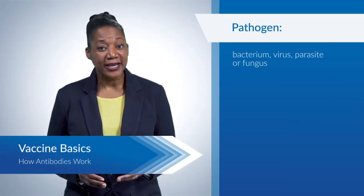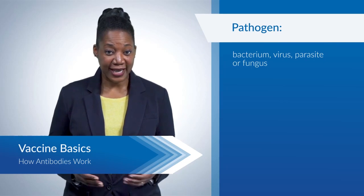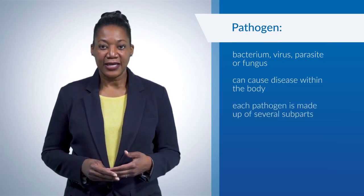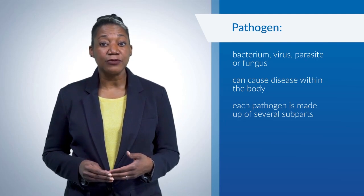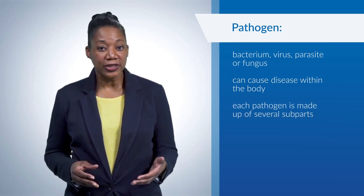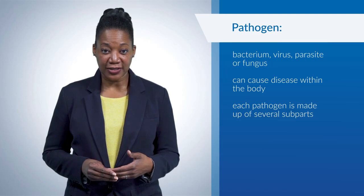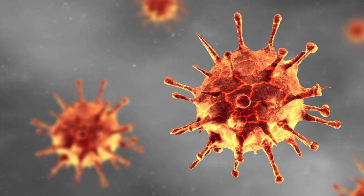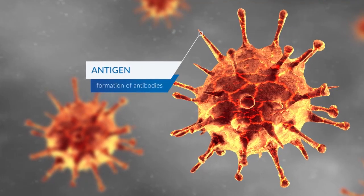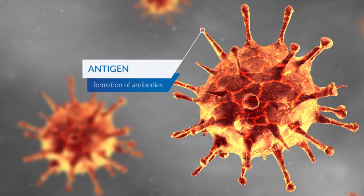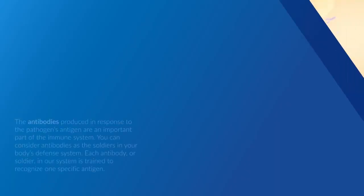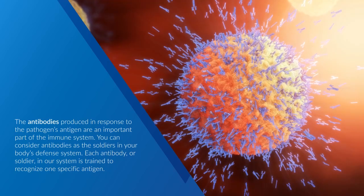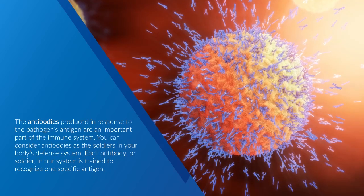A pathogen is a bacterium, virus, parasite, or fungus that can cause disease within the body. Each pathogen is made up of several sub-parts, usually unique to that specific pathogen and the disease it causes. The sub-part of a pathogen that causes the formation of antibodies is called an antigen. The antibodies produced in response to the pathogen's antigen are an important part of the immune system.